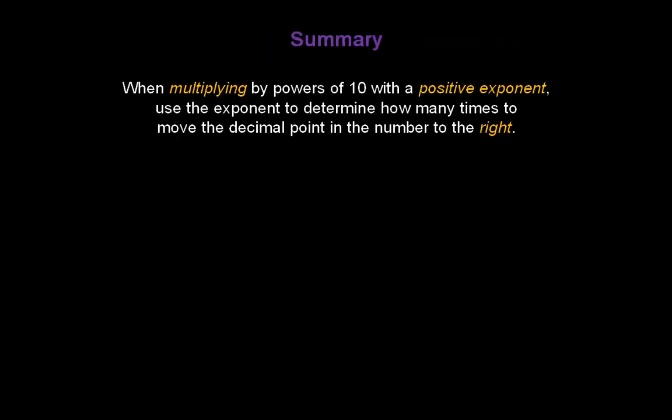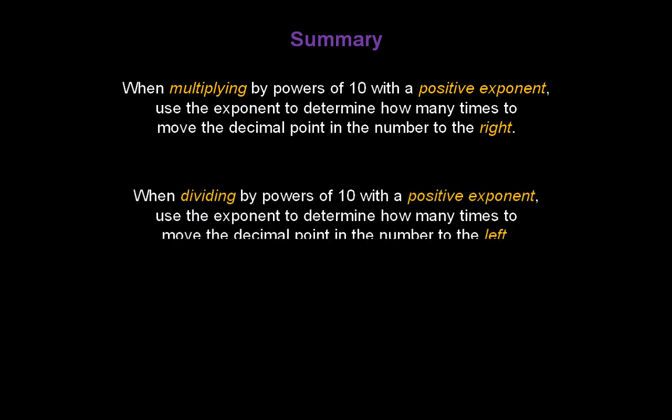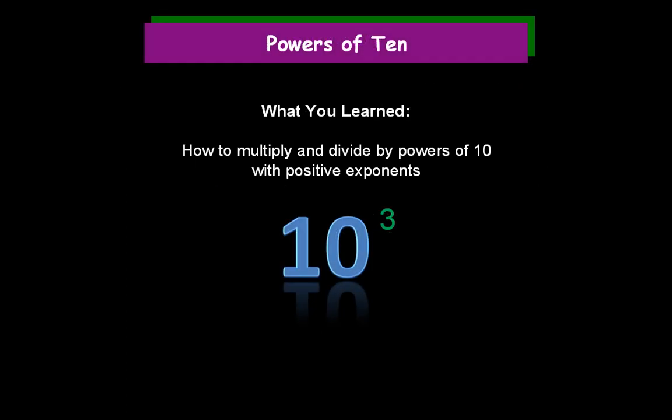In summary, when multiplying by powers of 10 with a positive exponent, use the exponent to determine how many times to move the decimal point in the number to the right. That's all there is to it. Congratulations! You've learned how to multiply and divide by powers of 10 with positive exponents.